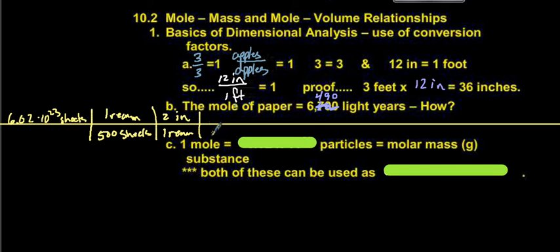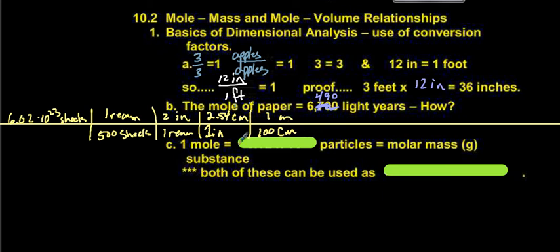There's another conversion: 1 inch equals 2.54 centimeters. The reason we're converting to metric is because that's the only way I know the speed of light. And we also know that 100 centimeters equals 1 meter. So at this point, what we've done is we would be able to figure out how many meters tall 6.02 × 10²³ sheets is: 1 ream equals 500 sheets, 1 ream equals 2 inches, 1 inch equals 2.54 centimeters, and 100 centimeters equals 1 meter.